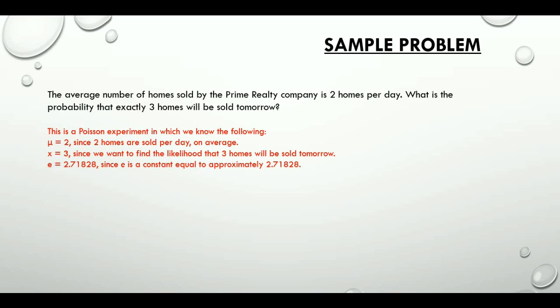So, going by the formula, this is what we get: 0.18. The probability that exactly 3 homes will be sold tomorrow is 0.18.